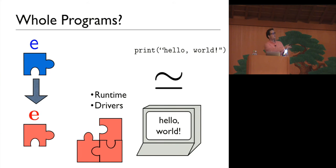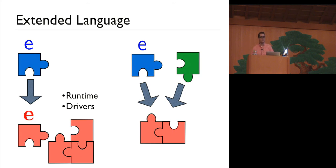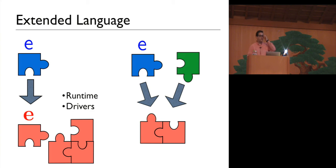Even a program as simple as Hello World is actually linking with the runtime system or some kind of device drivers. We also write libraries in one high-level language and then link with code written in other languages, and link them together at the assembly code level. By linking with code in other languages, we've now extended the language that programmers have to reason about. If the interface with these other languages is not well designed, I lose the high-level reasoning principles that my source language was designed to facilitate.